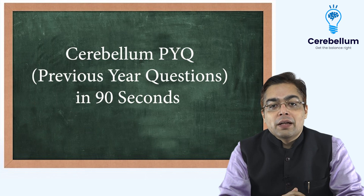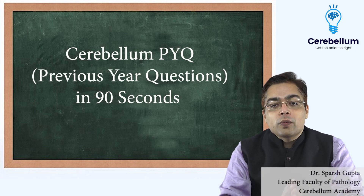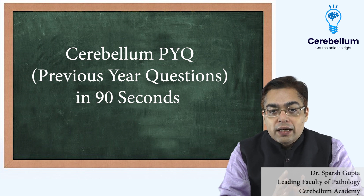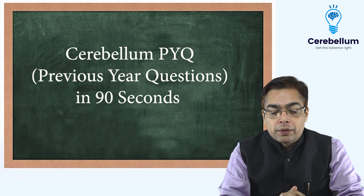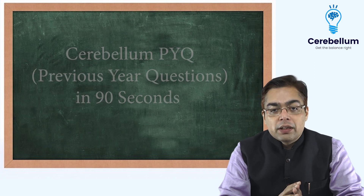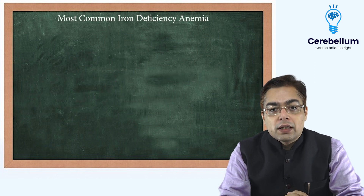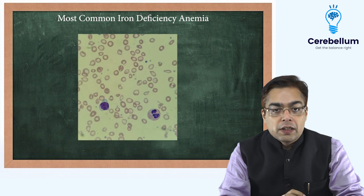Hi friends, welcome to the Cerebellum PYQ series. In the exam, the examiner gives you a clinical history that is very likely associated with formation of a particular diagnosis. For example, if we talk about the commonest anemia present in our country, that happens to be iron deficiency anemia.